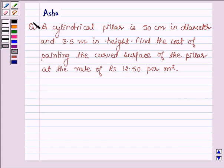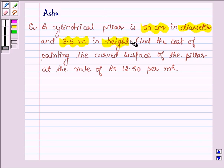Hello and welcome to the session. My name is Asha and I shall be helping you with the following question. A cylindrical pillar is 50 cm in diameter and 3.5 m in height. Find the cost of painting the curved surface of the pillar at the rate of Rs. 12.50 per m².